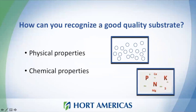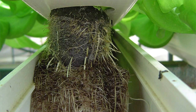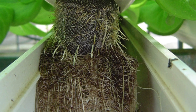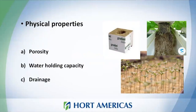How can we recognize a good quality substrate? This is a very important question. Let me show you the characteristics you need to consider when selecting a substrate. We will speak about the physical properties and the chemical properties. For physical properties, we will cover porosity, water holding capacity, and drainage — three very important physical properties you need to check in order to select the best option for your crop and your hydroponic system.